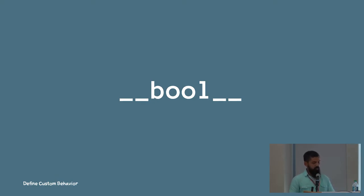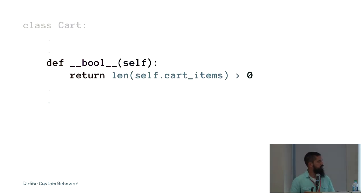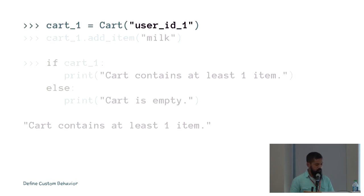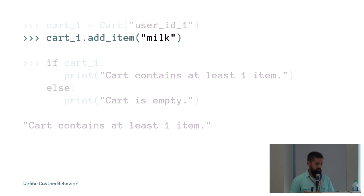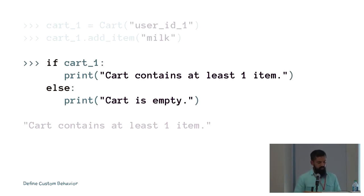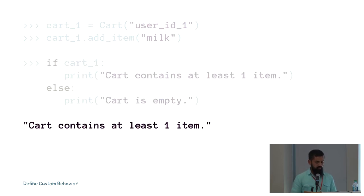Dunder bool is used for computing the truthiness of an object. You can use your object in conjunction with an if statement if you implement dunder bool. Here's a simple implementation — I'm returning true if the number of cart items is greater than zero. Now when I instantiate a new object and add an item into it, I can write 'if cart_one' and do something or else do something else. Because we have added one item into the cart, we hit the first print statement.